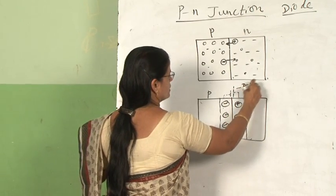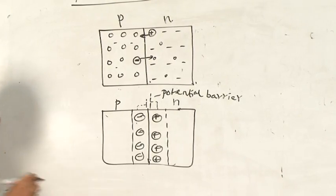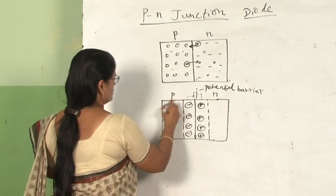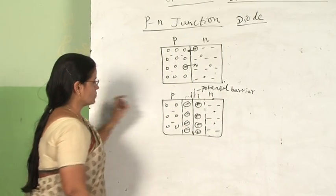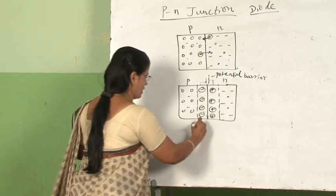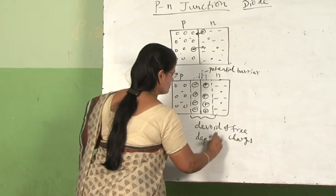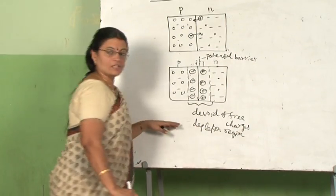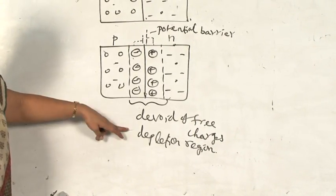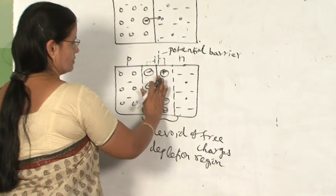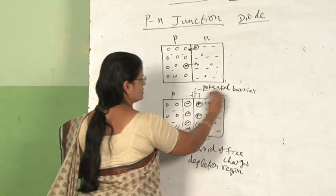The immobile ions accumulated near the junction generate a potential barrier. These charges cannot move — they are immobile — and this region is called the depletion region because it is devoid of free charges. The removal of moving charges creates the depletion region, and the accumulation of immobile charge carriers develops an electric field or potential difference across the junction, which is called the potential barrier.